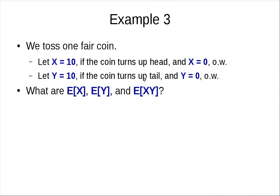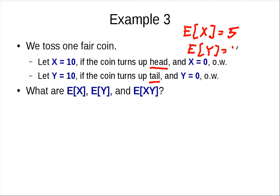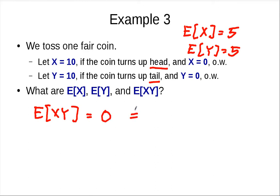Let's look at the last example. We toss one fair coin, but let X equal 10 if it turns up heads, and Y equal 10 if it turns up tails. With the same analysis, the expected value of X is 5 and the expected value of Y is also 5. But when X is 10, Y is 0, and when Y is 10, X is 0. So the expected value of the product is always 0, which is not equal to E[X] times E[Y] = 25. So in many cases you cannot say that E[XY] equals E[X] times E[Y].